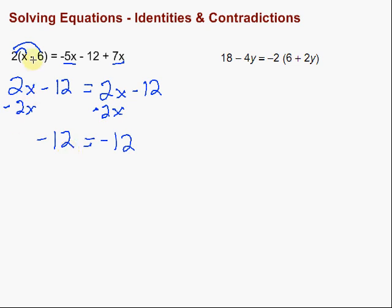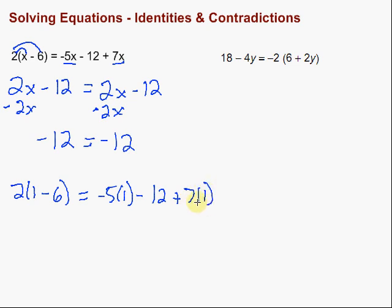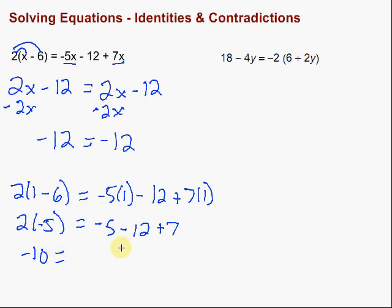We can try one if you'd like. Let's just throw in 1, for example, and see what we get. It would be 2 times 1 minus 6 equals negative 5 times 1 minus 12 plus 7 times 1. Order of operations: 1 minus 6 is negative 5, so 2 times negative 5 on the left. On the right, negative 5 times 1 is negative 5, minus 12, plus 7. Then 2 times negative 5 is negative 10, and negative 5 minus 12 is negative 17, plus 7 is indeed negative 10.